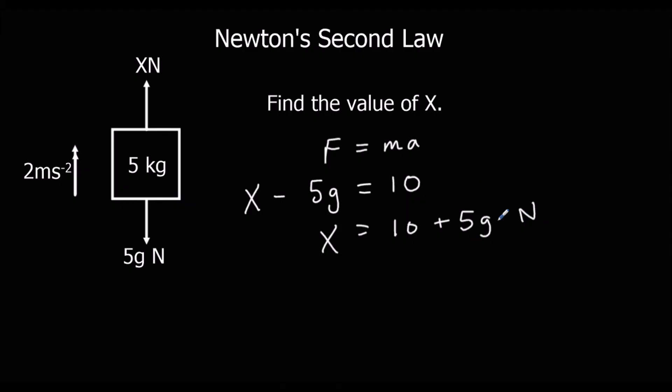If you wanted to get a decimal answer, 10 plus 5 times 9.8 is 59 newtons. Either of those is okay.